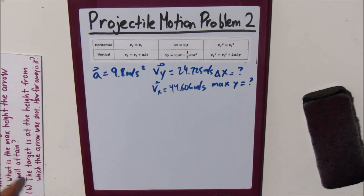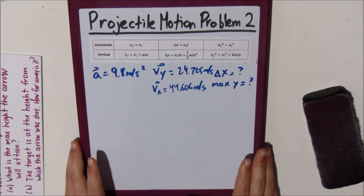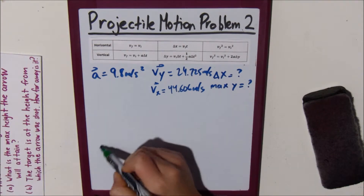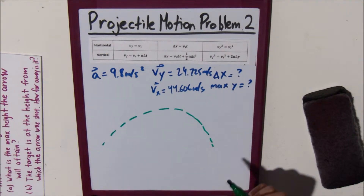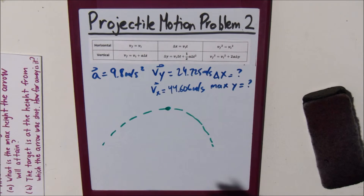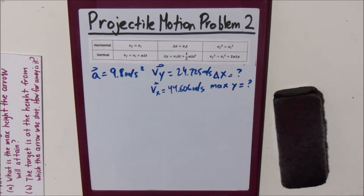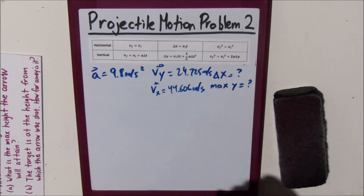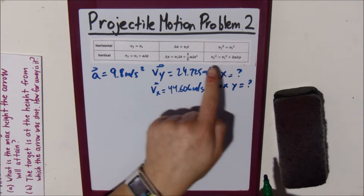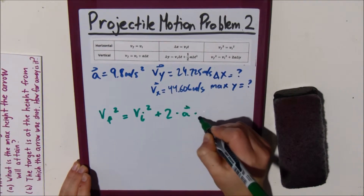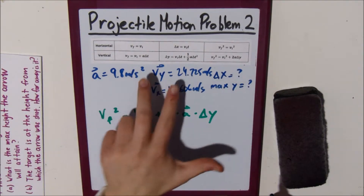So we're trying to find the max height the arrow will obtain. The key to solving max height problems is that at its highest point, the vertical component of the velocity is 0 — there's no vertical velocity at that peak. So we're going to solve for delta y using the equation vf² = vi² + 2aΔy. I picked this equation because the others either only give delta t or also require delta t, and we want the change in height.